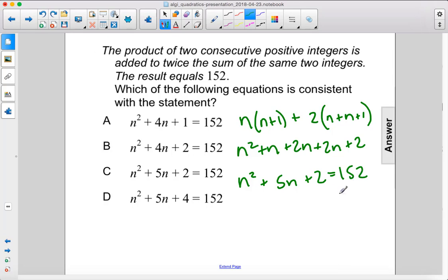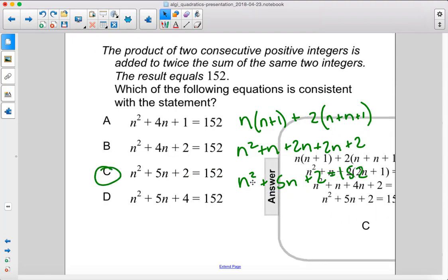So if we move this, that's just the answer right there. We have n squared plus 5n plus, alright, C. So we don't have to take it any further. The answer is C.